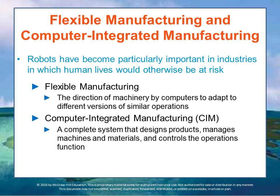Another important technology is called flexible manufacturing. In this model, computers can direct machinery to adapt to different versions of the product depending on what is being built at a particular stage of the cycle. For example, with instructions from the computer, one machine can be programmed to carry out its functions for several different versions of an engine as the car moves down the production line. It doesn't need to shut off production — it just makes different engines or different models based on how the computer is programmed.